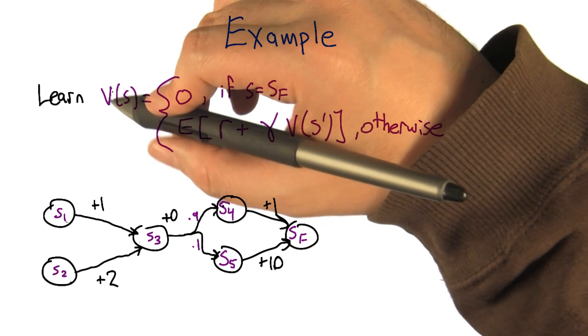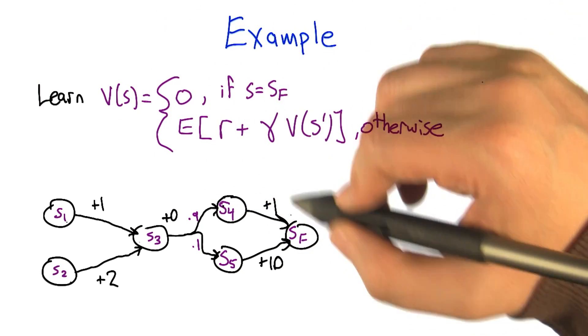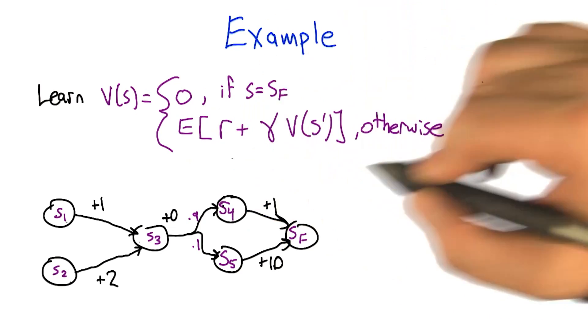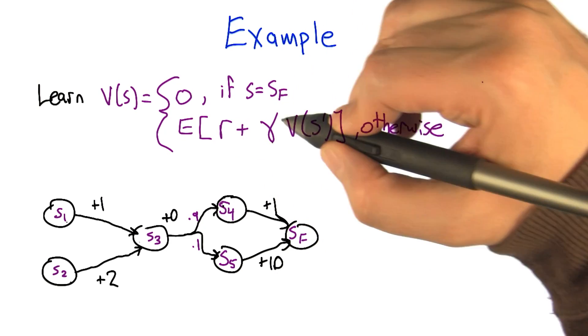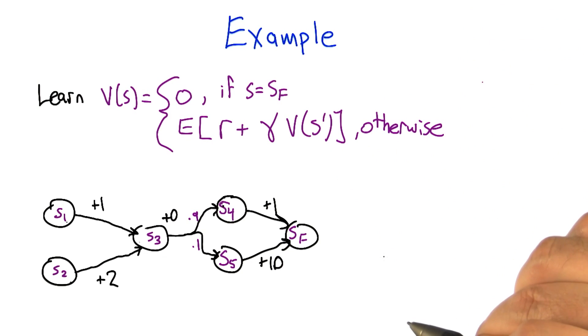What we'd like to learn here is a value function, a function that maps the state to some number, where that number is set to zero for the final state. For every other state, it's the expected value of the reward plus the discounted value of the state that we end up in, averaged across all the different states we might end up in.